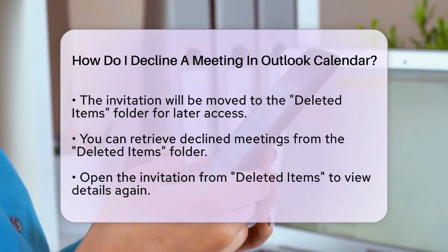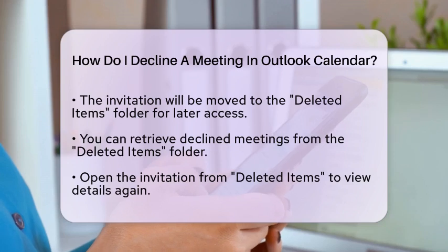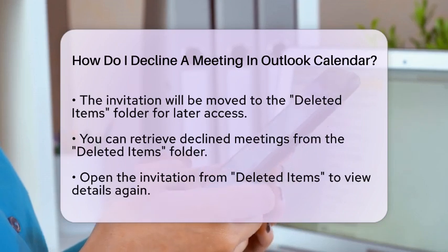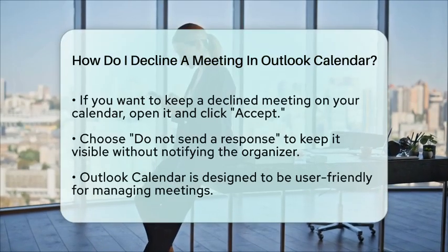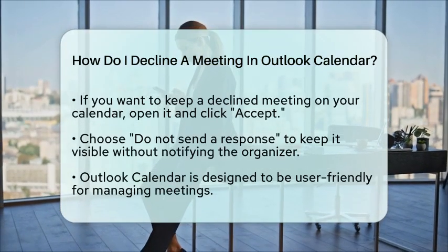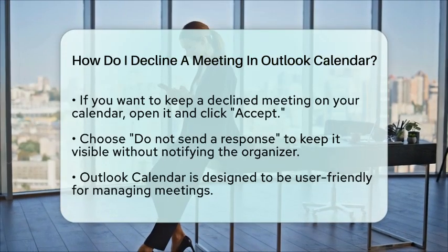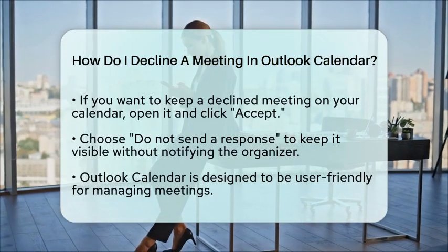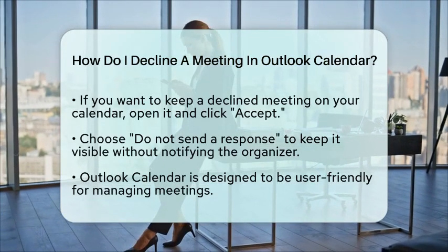In case you want to keep a declined meeting visible on your calendar, there is a way to do that too. You can manually move it back — simply open the invitation from the Deleted Items folder, click Accept, and then choose Do Not Send a Response. This way, the meeting stays on your calendar without notifying the organizer.